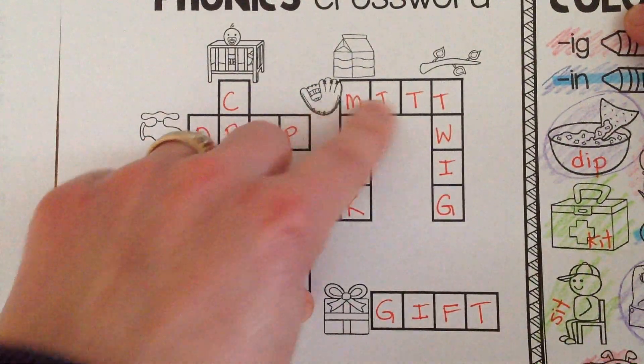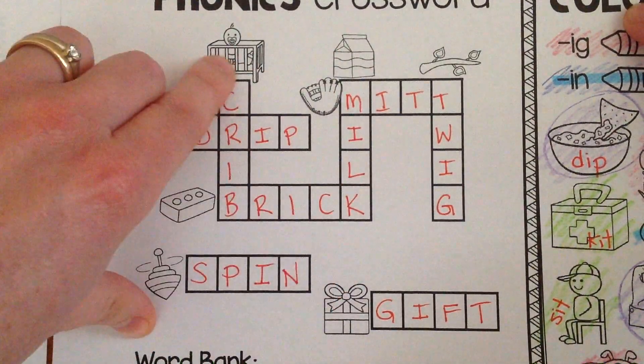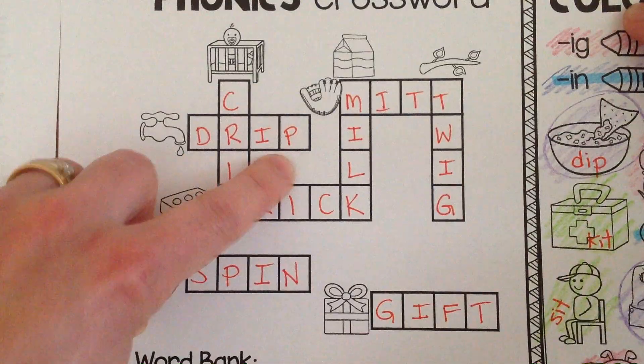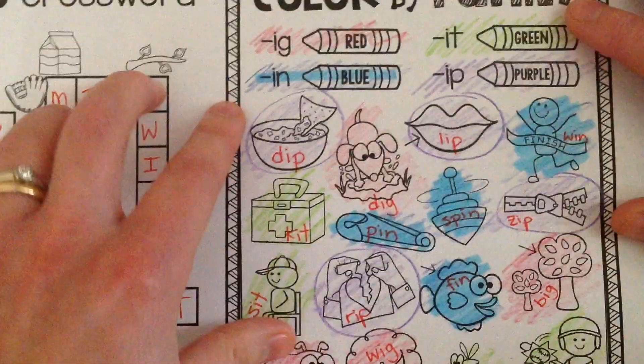Mitt, twig. Milk, brick. Crib, drip. Spin, gift. All right.